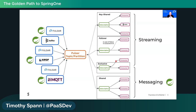Data goes into a Pulsar topic, which can be partitioned like Kafka. How you consume it determines the type of streaming or messaging you're doing. Many different apps — Spring, Java, Python, Spark, Flink, NiFi — can each decide how they want to get the data and what consumption style to use. Each consumer gets its own subscription, and you can have as many topics as you want — even a million topics. No problem.